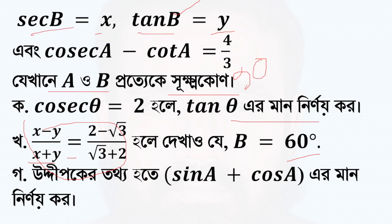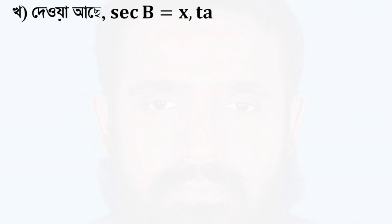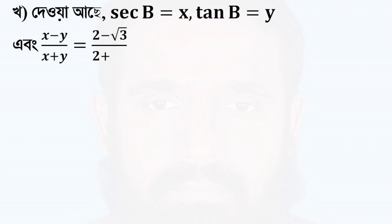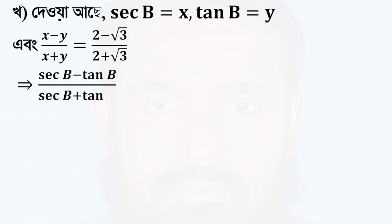So, tan theta is equal to 1 by root 3, by 2 plus root 3. So, tan theta is equal to 1 by root 3.